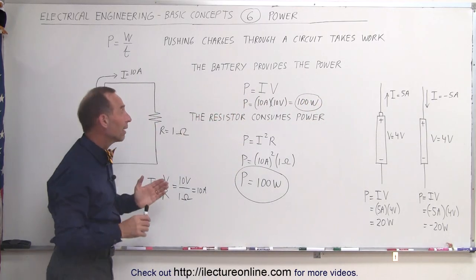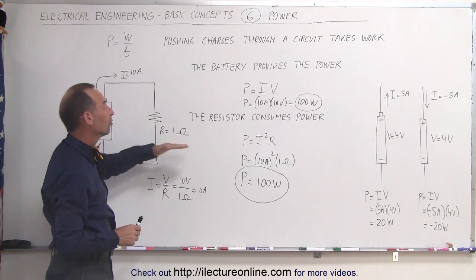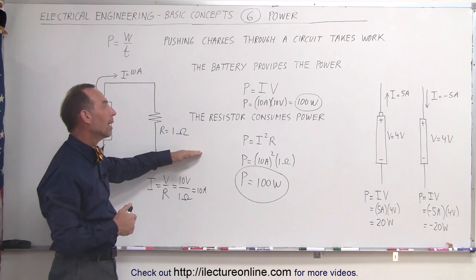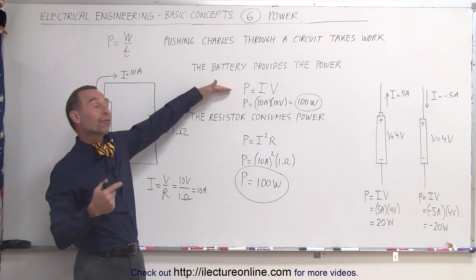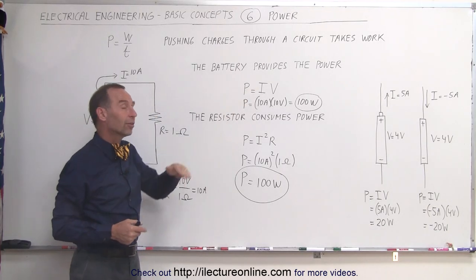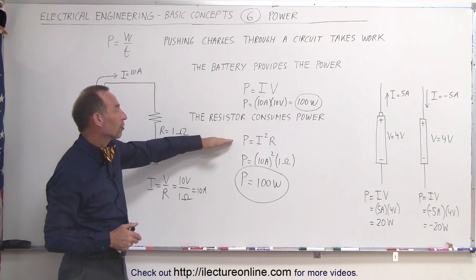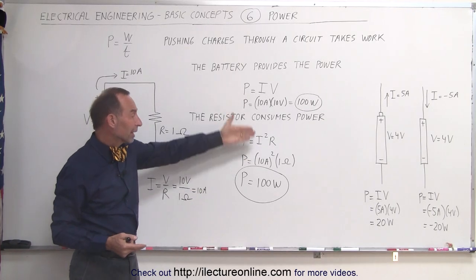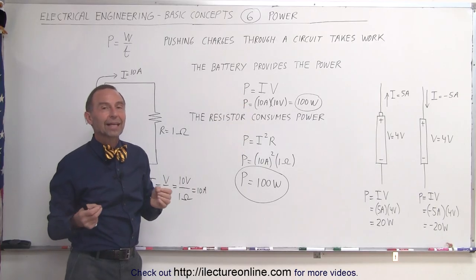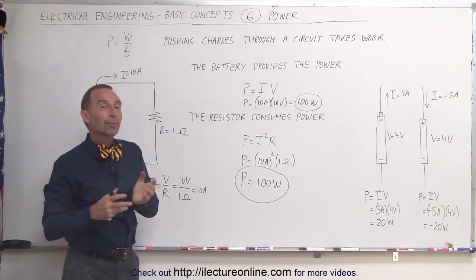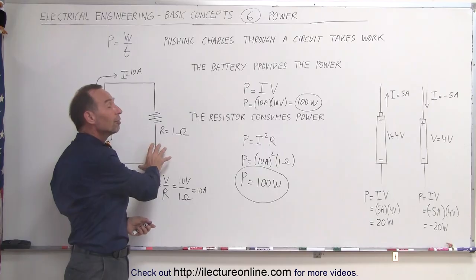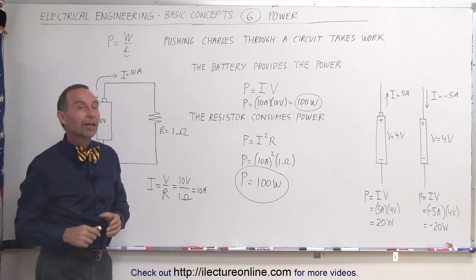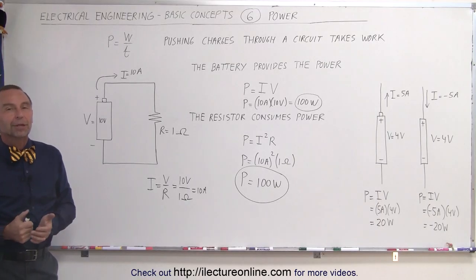Again, the difference: batteries produce power, resistors or sources or loads on the circuit, they consume power. The equation we typically use for providing power is current times voltage. The equation we typically use for consumption of power is I squared R. In many cases, you'll get the very same result by calculating both the power provided and the power consumed, unless there's other devices that are also consuming power and you're not considering those. That's what we mean by power in the circuit.